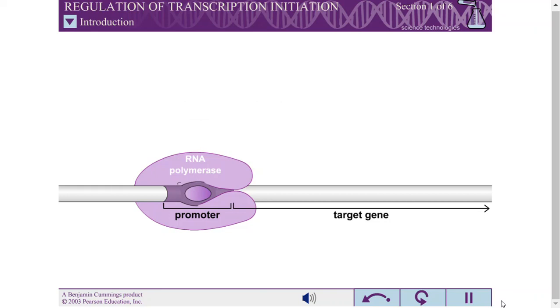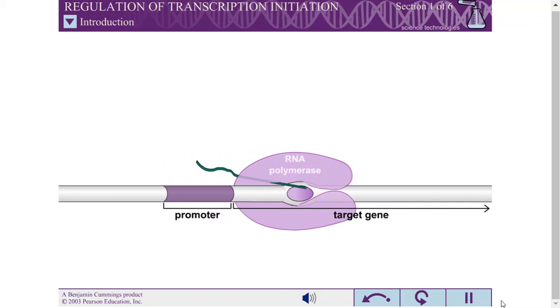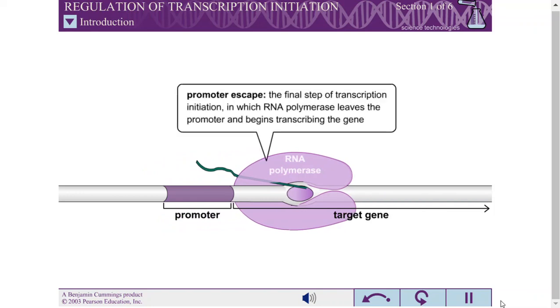In the final step of transcription initiation, RNA polymerase leaves the promoter and begins transcribing the gene. This step is called promoter escape.